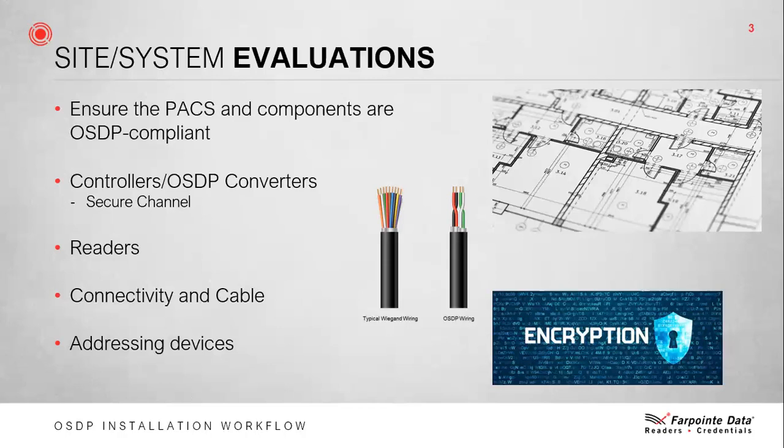When choosing your physical access control system, make sure to check their OSDP deployment capabilities. While OSDP is a communication protocol between hardware — readers and controllers specifically — you also need to make sure that your system software can support OSDP. For controllers, you'll need to determine that the controllers you plan to deploy support OSDP. Not all system manufacturers manufacture their own controllers, and not all controller manufacturers support OSDP natively or may only support OSDP in specific topologies. For example, some controller manufacturers support OSDP using RS-485 but only in a point-to-point topology and do not support the multi-drop option.